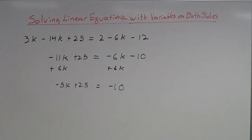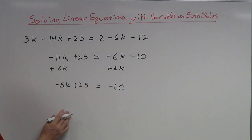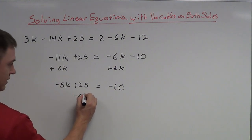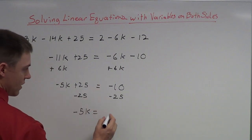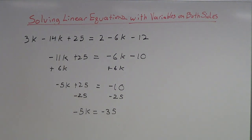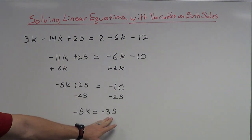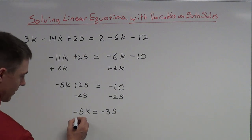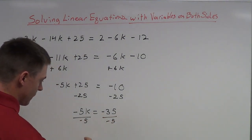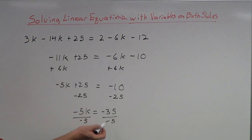Notice that 25 didn't change at all. Now I'm going to get the numbers on the right side. Since the variable goes on the left, the constants are going to go on the right. That means this 25 needs to go to the other side — I'll subtract it over. So negative 5k equals negative 35 — both are negative numbers. I need to divide by negative 5 to get k by itself, so k equals positive 7. The negatives cancel, so k is equal to 7.